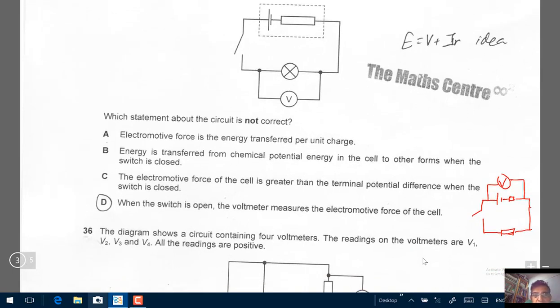A, electromotive force is the energy transferred per unit charge. This is surely correct. That's the definition of EMF. B, energy is transferred from chemical potential energy in the cell to other forms when the switch is closed. Also correct.